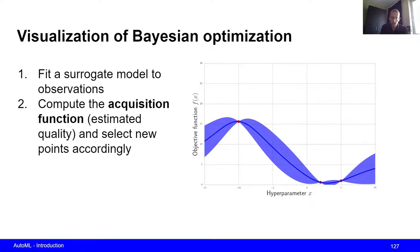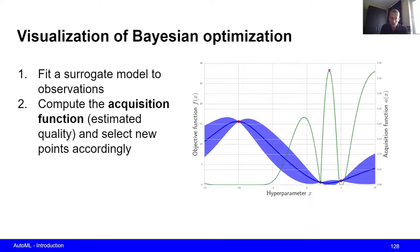So what this would look like is we compute the acquisition function, which tells us how good these hyperparameters are expected to be. So as you can see, the acquisition function is very high in between these points. The reason is that we evaluated both of these points, they were actually quite good because they had a low loss or a low objective function.